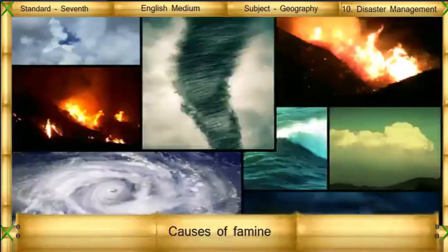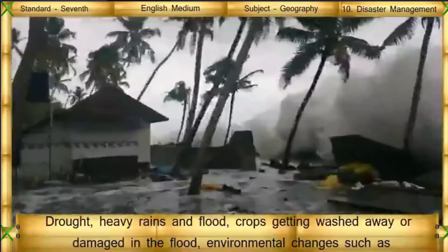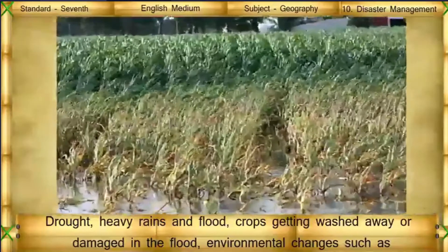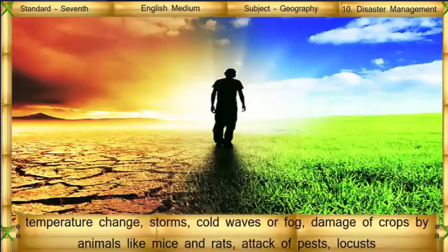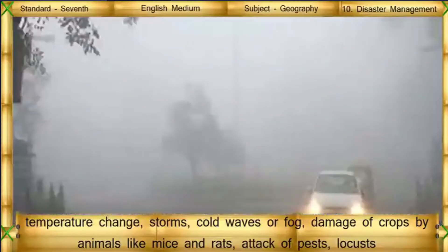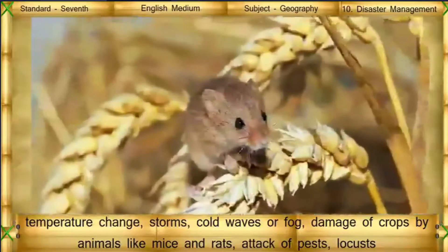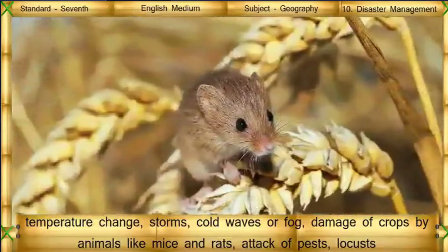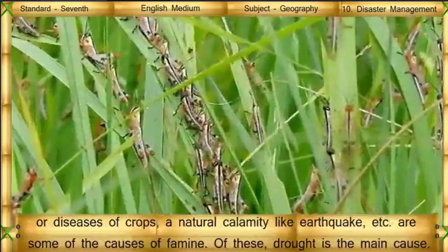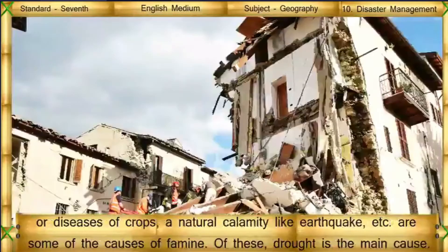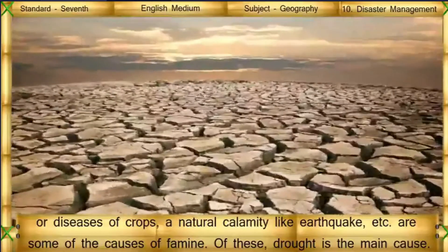Causes of famine: Drought, heavy rains and flood, crops getting washed away or damaged in the flood, environmental changes such as temperature change, storms, cold waves, or fog, damage of crops by animals like mice and rats, attack of pests, locusts, or disease of crops, and natural calamities like earthquakes are some of the causes of famine. Of these, drought is the main cause.